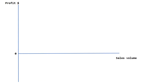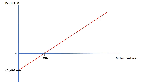The profit volume chart plots profits made at different sales volumes. Using the same data, we know that at the breakeven point of 834 units we make neither a profit nor a loss, and when we sell no units we still incur $5,000 of fixed costs, making a loss of $5,000. Using just these two data points we can plot the profit volume line. At sales volumes below 834 units we make a loss; above 834 units we make a profit. If our budgeted sales are 2,000 units, the margin of safety falls between 834 and 2,000 units, giving a margin of safety of 1,166 units.